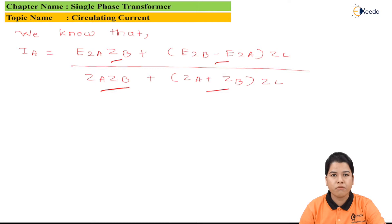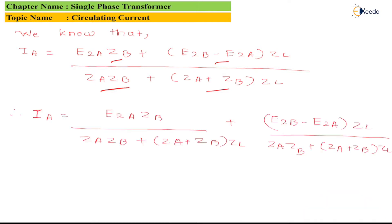If we separate the two terms, we get: Ia = (E2A × ZB) / (ZA × ZB) + (E2B − E2A) × ZL / (ZA × ZB + (ZA + ZB) × ZL).